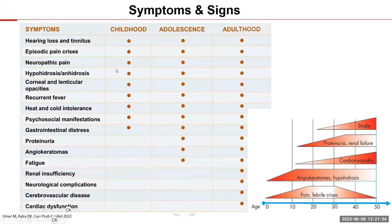Many features appear in childhood: episodic pain crises, sacral paresthesias, inability to sweat, corneal findings, and heat and cold intolerance. Some features manifest more in adulthood — for example, cardiomyopathy starts in the 30s and progresses with age. Renal disease starts earlier: proteinuria appears in adolescence, and ESRD occurs by the 40s and 50s. Stroke starts to appear in the mid-30s, and neurological symptoms accumulate with time.